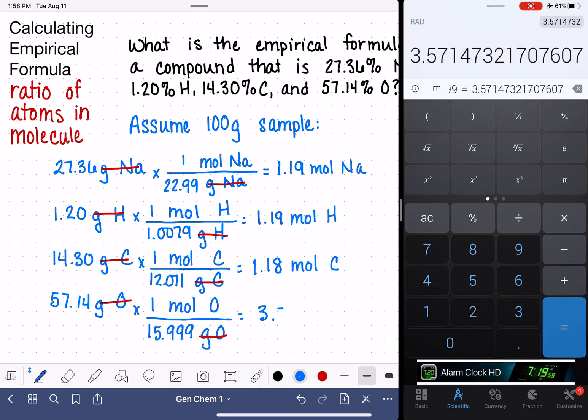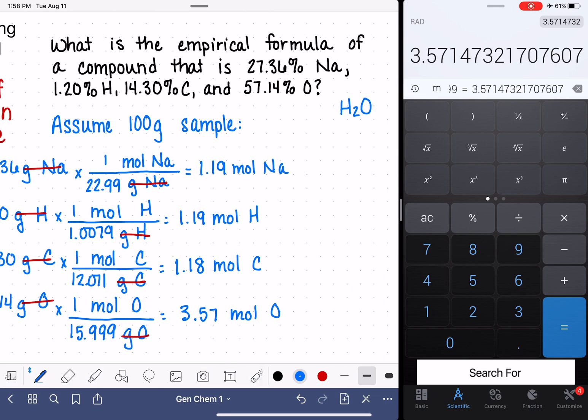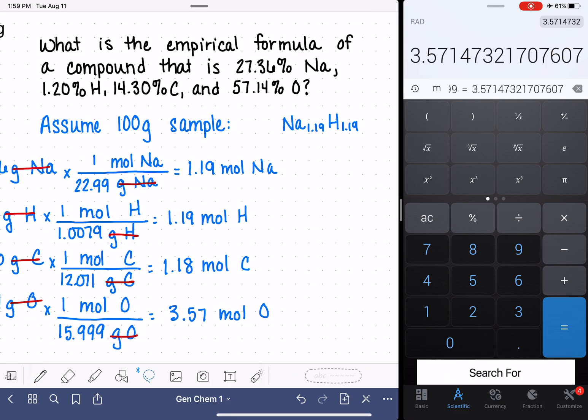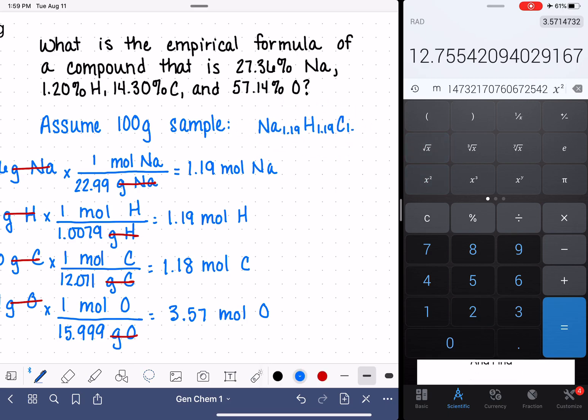57.14 divided by 15.999. 3.57 moles of oxygen. So what we have calculated here is the mole to mole to mole to mole ratio of these three elements. And kind of, I'm going to erase my water thing up here. Kind of, we've already figured out the empirical formula. So it is 1.19 moles of sodium, 1.19 moles of hydrogen, 1.18 moles of carbon and 3.57 moles of oxygen.